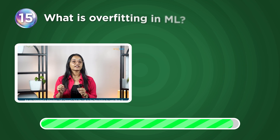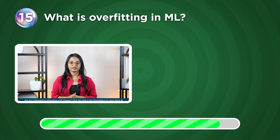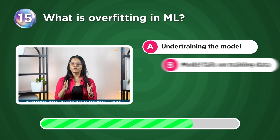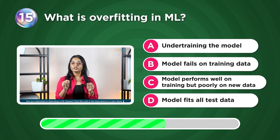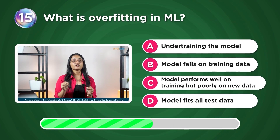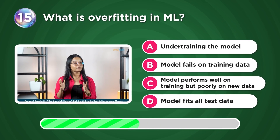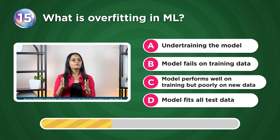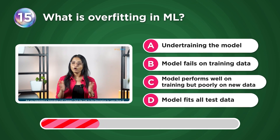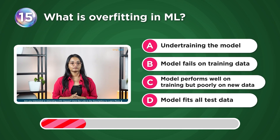What is overfitting in machine learning? Under training the model, model fails on training data, model performs well on training but poorly on new data, or model fits all the test data?